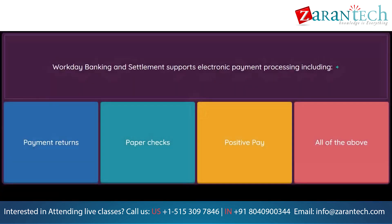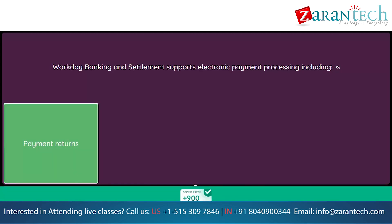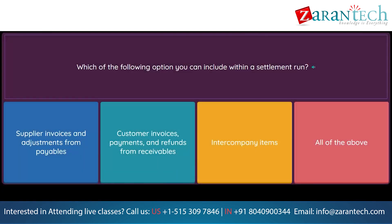Question: Workday banking and settlement supports electronic payment processing including. Option 1: payment returns. Option 2: paper checks. Option 3: positive pay. Option 4: all of the above. Question: Which of the following options can you include within a settlement run? Option 1: supplier invoices and adjustments from payables. Option 2: customer invoices, payments, and refunds from receivables. Option 3: intercompany items. Option 4: all of the above.